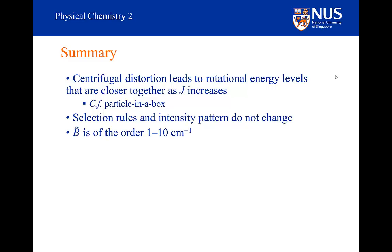What are representative values for these parameters for a diatomic? My rotational constant is normally in the range of about 1 to 10 wave numbers. It might be slightly smaller than 1, but normally it is somewhere between 1 and 10.